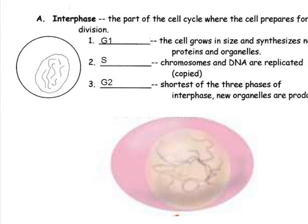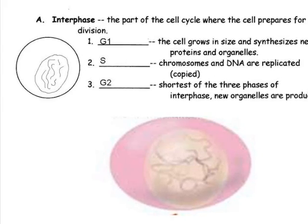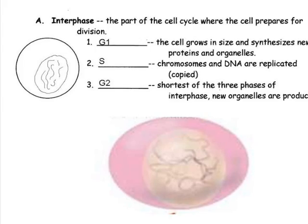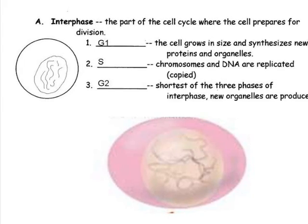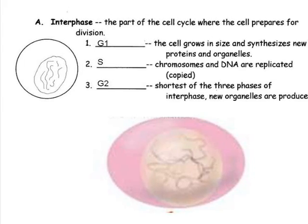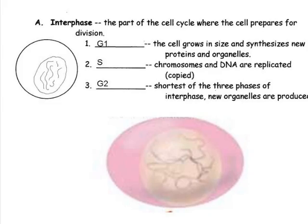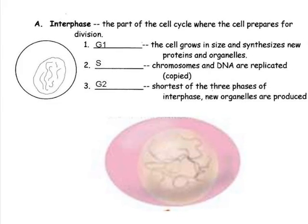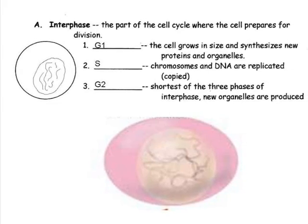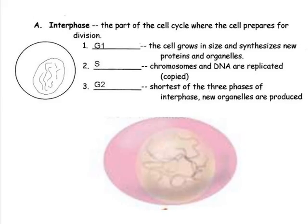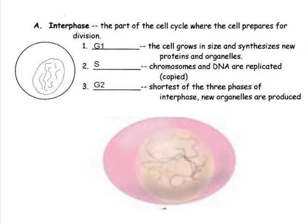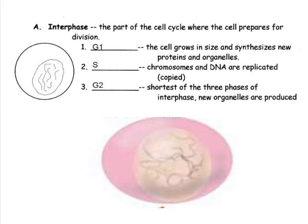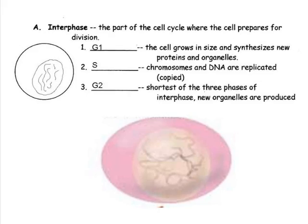During interphase, the cell grows in size and synthesizes new proteins and organelle parts. The chromosomes or DNA are replicated — replicated means that they are copied. After all of the DNA is copied, the organelles are assembled and the cell is ready for division.